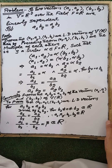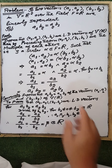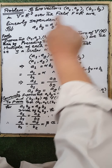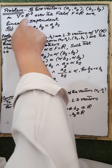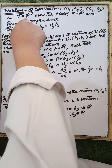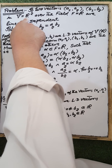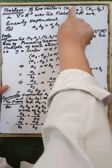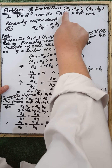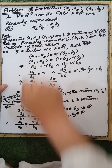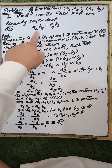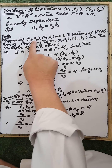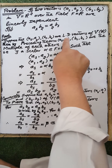Our next problem: given two vectors f1 and f2 of the vector space V, which is R² over the field F equal to R, with coordinates (a1, a2) and (b1, b2), if these two vectors are linearly dependent, then the coordinates of these two vectors satisfy the condition a1·b2 = a2·b1. Proof: suppose that these two vectors are linearly dependent.